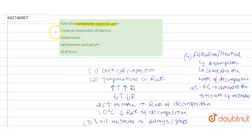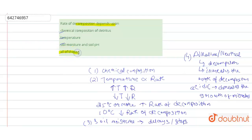Looking at all the options: the first option, chemical composition of detritus, is correct. The second option, temperature, also directly affects the rate of decomposition. The third option, soil moisture and soil pH, is also correct. Therefore, the right answer is option four — all of these.